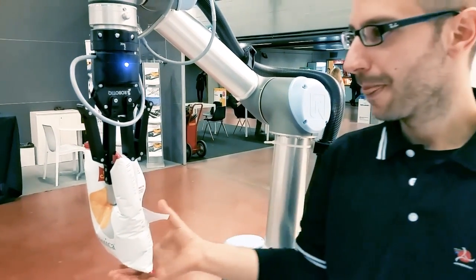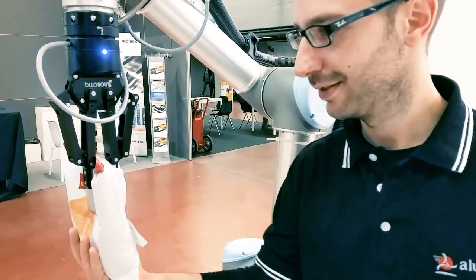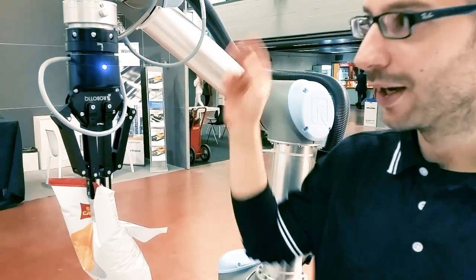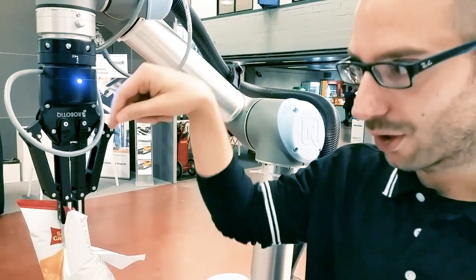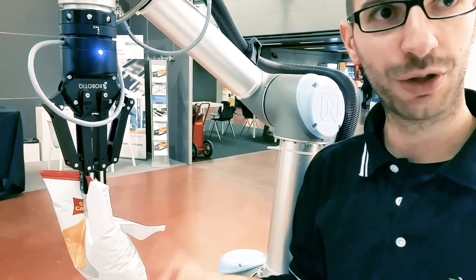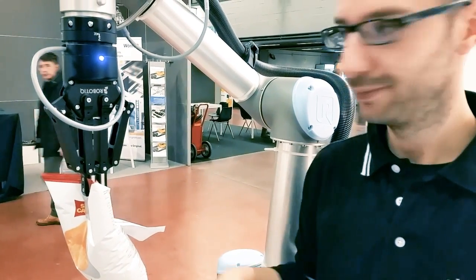Now I can show you the regrasping function. If I try to move the object, the force applied from the robot through the sensor on the robotic gripper is enough to maintain the position of this object, which doesn't fall from the robot.